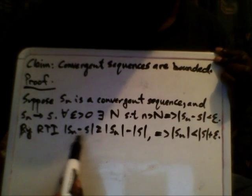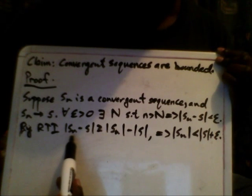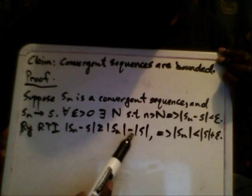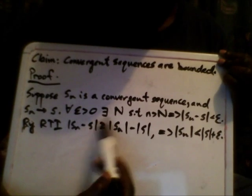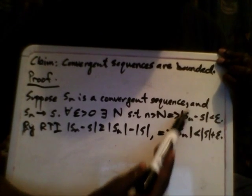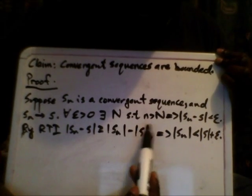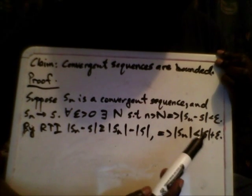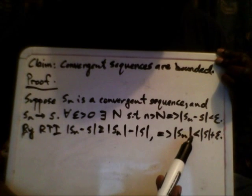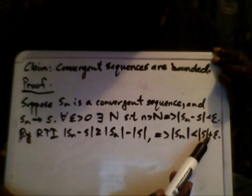As you can see, we have the absolute value of Sₙ minus S is greater than or equal to |Sₙ| minus |S|. So if we substitute that in — since this is less than epsilon — and add absolute value of S to both sides, we end up with |Sₙ| is less than |S| plus epsilon. We've simply manipulated the inequalities.